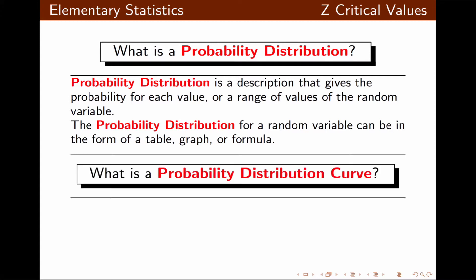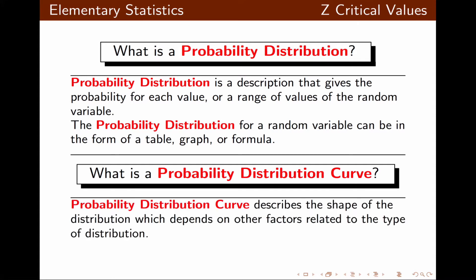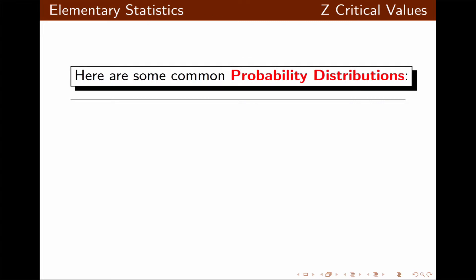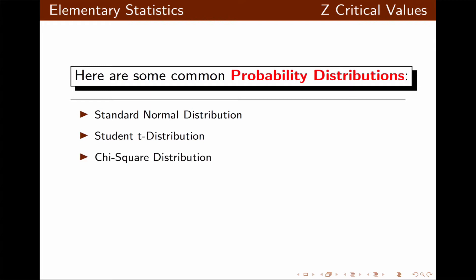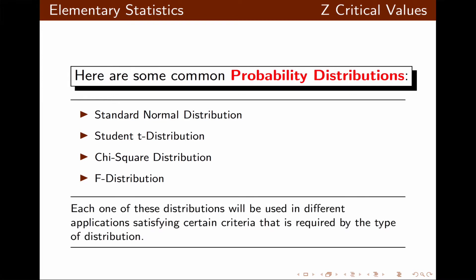The probability distribution curve describes the shape of the distribution, which depends on many factors related to the type of distribution. It is often called a density curve. Some common probability distributions include the standard normal distribution, student t distribution, chi-square distribution, and f distribution. These are used in different applications and must satisfy certain criteria related to the type of distribution and application.